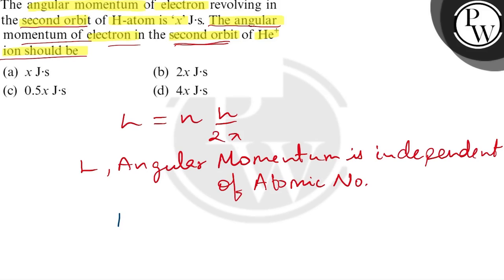We can see that L of H atom in second orbit will be equal to L of He+ ion in second orbit. So our final angular momentum will also be equal to x joules second. Our option x joules second will be the correct answer.